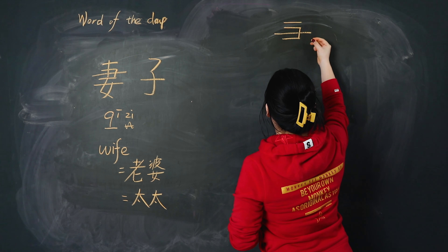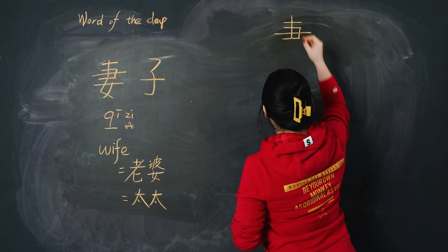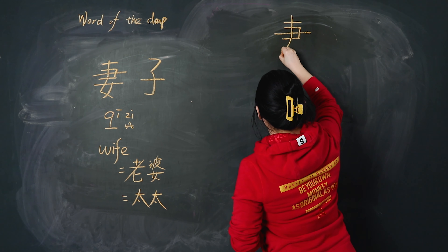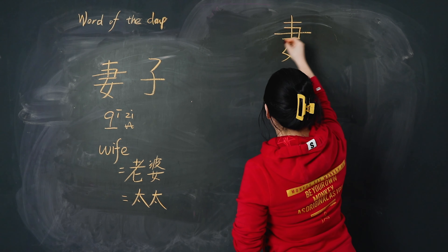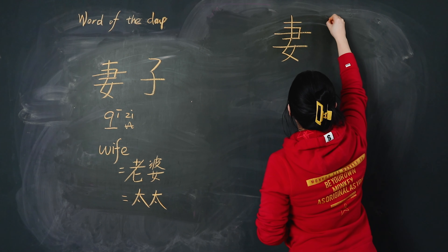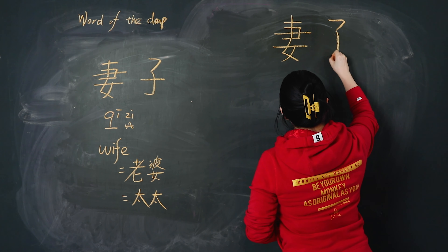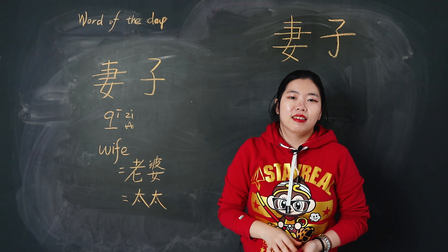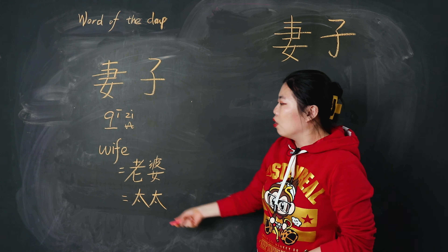Now let's write it. 我们一起写. 横, 横折, 横, 横, 横, 树. Pay attention, 树 only to here. And 撇, 撇, 横. 戚. And 子: 横, 扇, 横. 妻子.